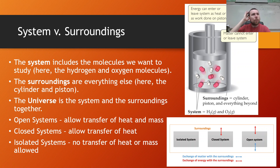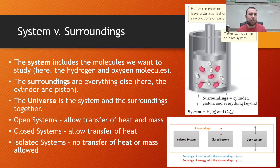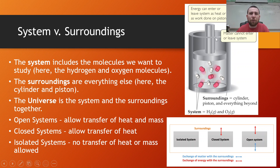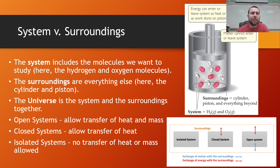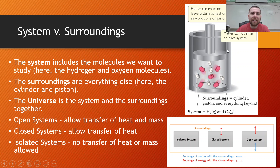When we say something is endothermic or exothermic, we're saying that the system is what we're defining, and we're saying that energy is either going into or leaving the system from the surroundings or into the surroundings. From a chemistry standpoint, when we say a system, it's going to include the molecules that we want to study. Looking at the piston example, you've got hydrogen and oxygen molecules in the piston — those are the molecules we're studying, so that's the system. The surroundings would be classified as anything else that's interacting with your system.